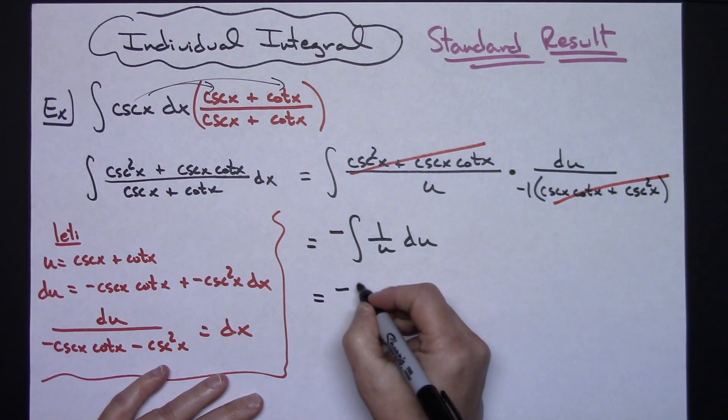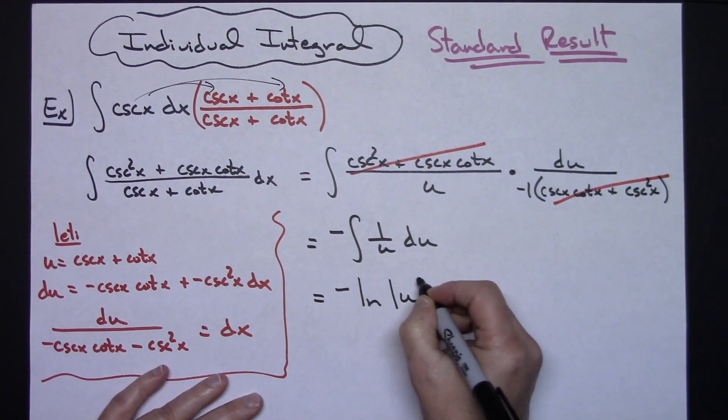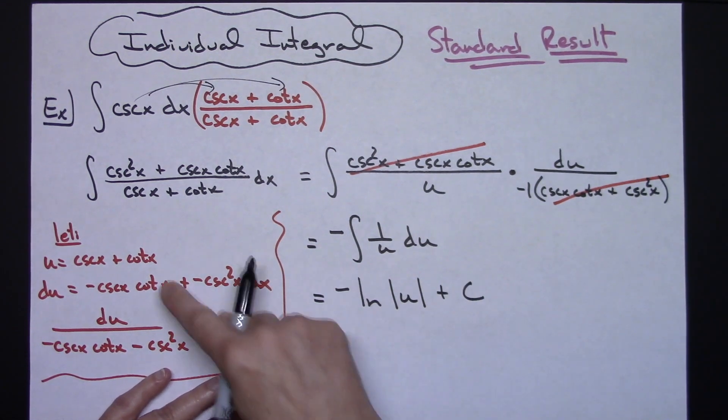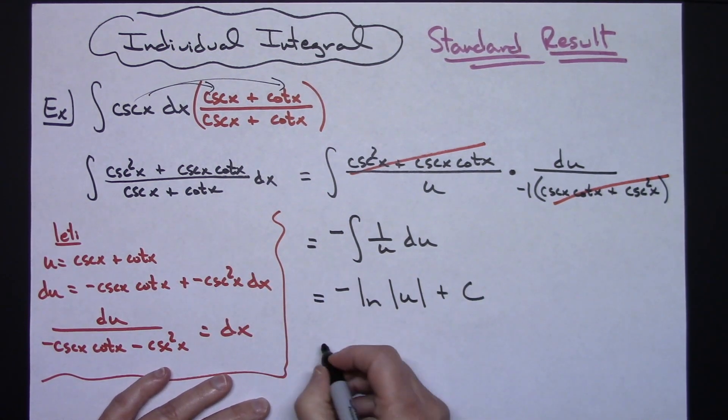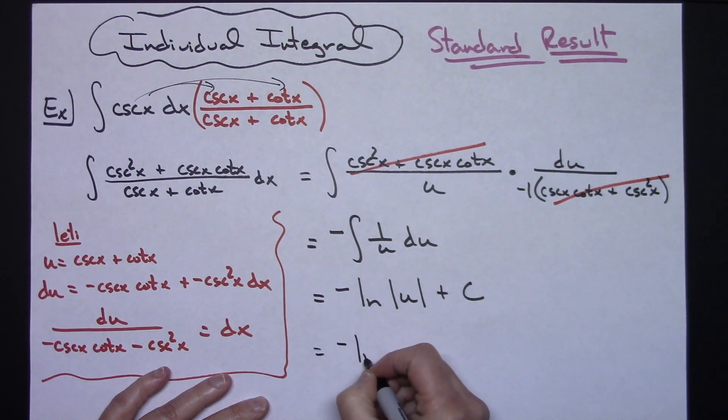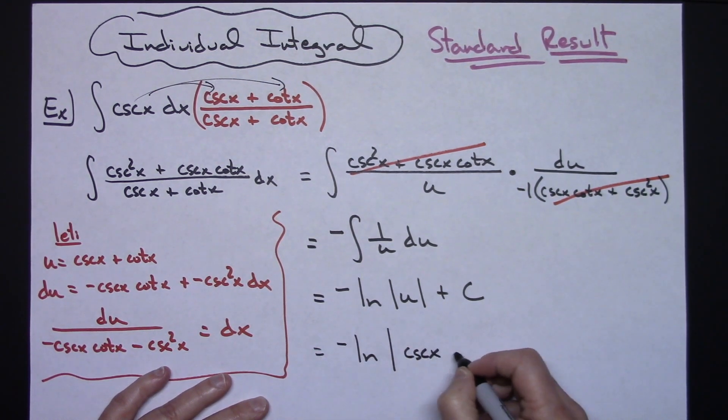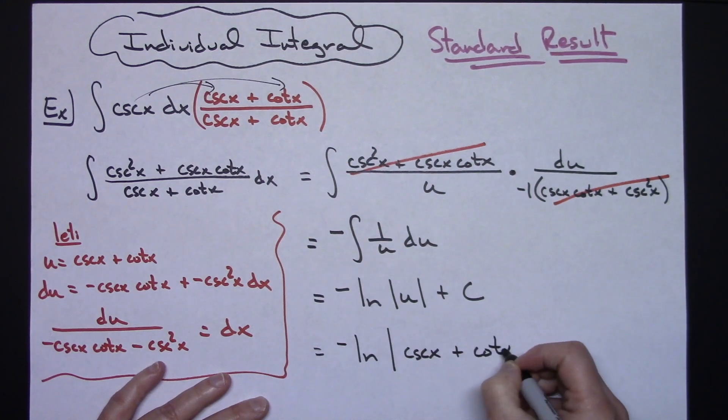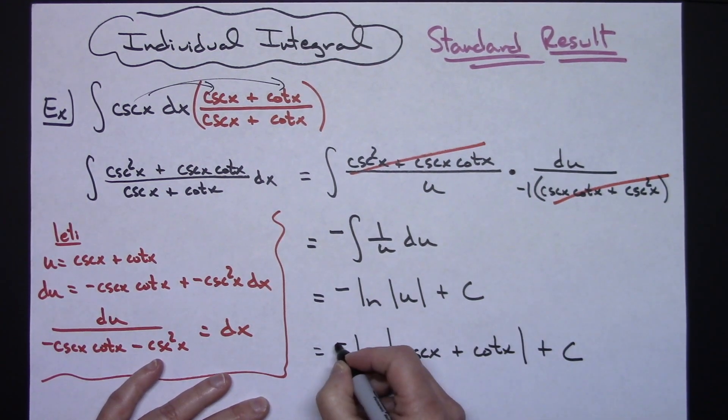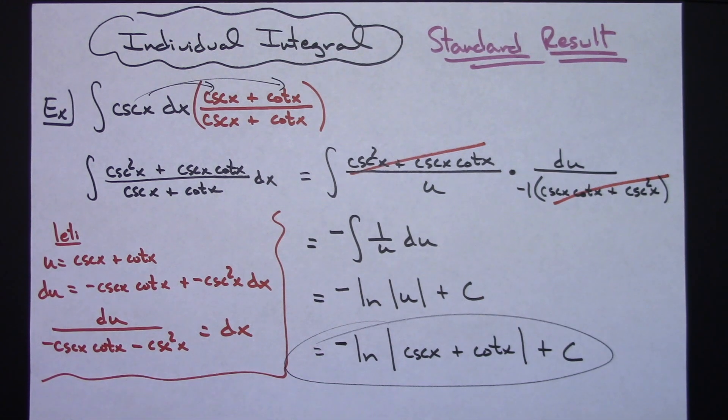So negative natural log absolute value of u plus c. Replacing u, we get negative natural log absolute value of cosecant x plus cotangent x, plus c, which is the standard result.